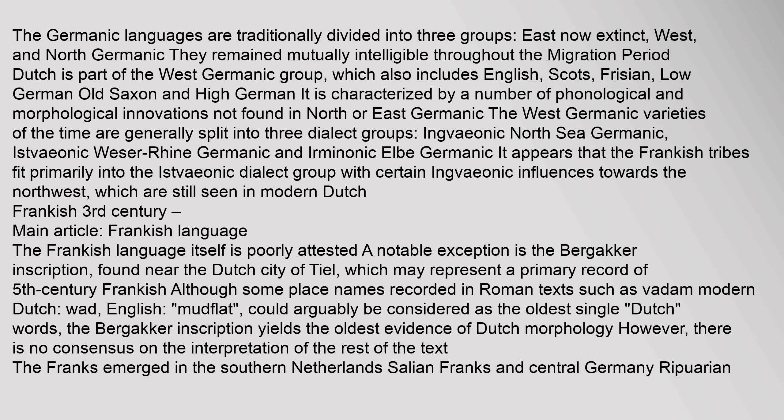The Germanic languages are traditionally divided into three groups: East (now extinct), West, and North Germanic. They remained mutually intelligible throughout the migration period. Dutch is part of the West Germanic group, which also includes English, Scots, Frisian, Low German (Old Saxon), and High German. The West Germanic varieties of the time are split into three dialect groups: Ingvaeonic (North Sea Germanic), Istvaeonic (Weser-Rhine Germanic), and Irminonic (Elbe Germanic). The Frankish tribes fit primarily into the Istvaeonic dialect group, with certain Ingvaeonic influences towards the northwest still seen in modern Dutch.